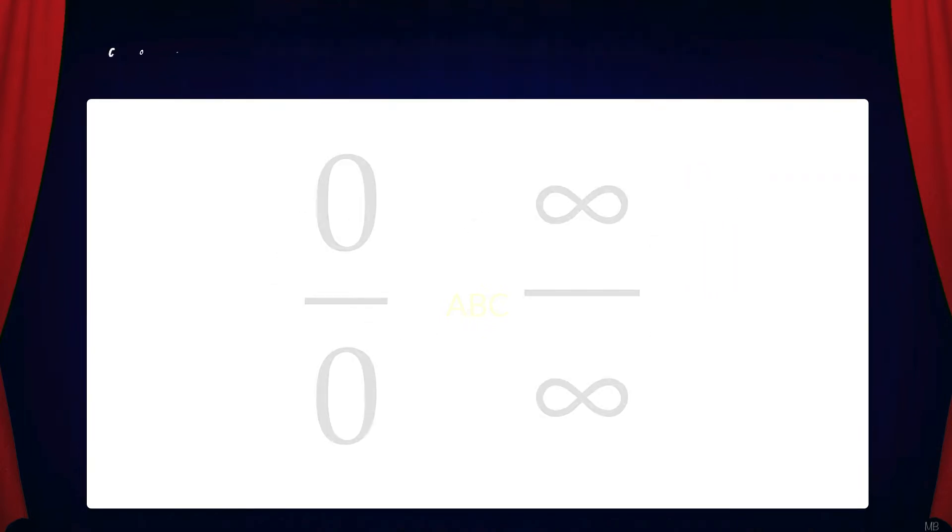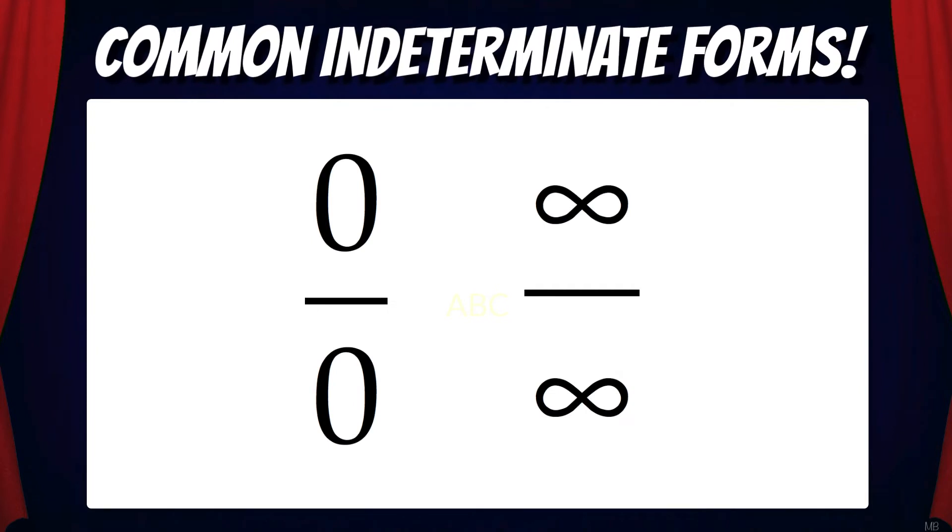By the way, some common indeterminate forms in calculus include 0 over 0 and infinity over infinity. We'll address these in more detail in a future video.